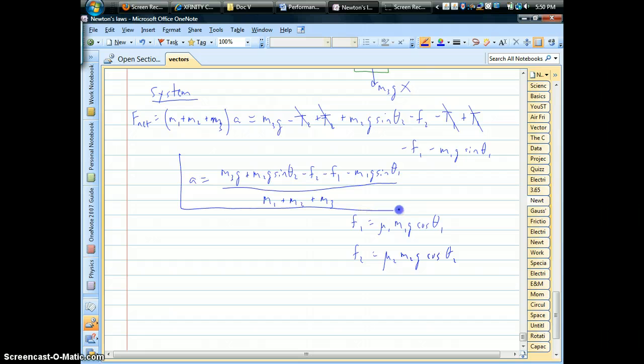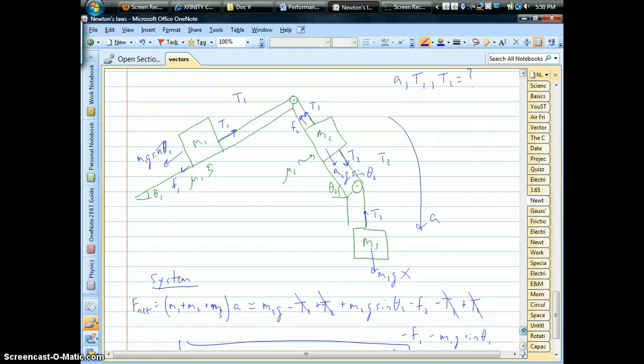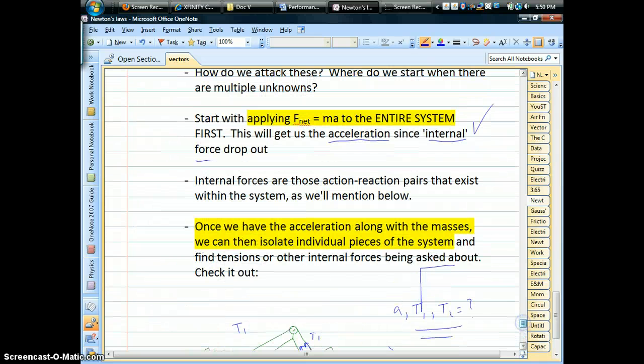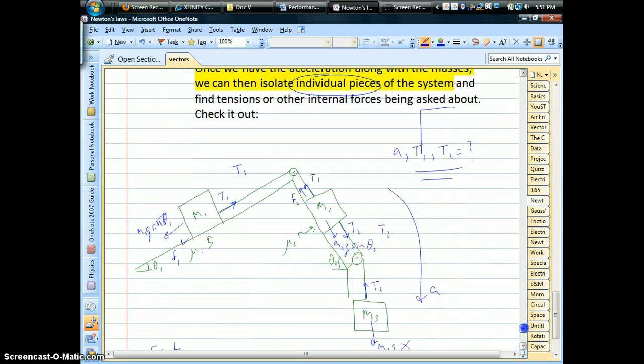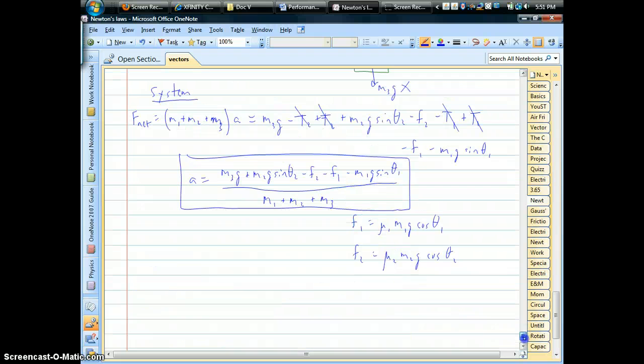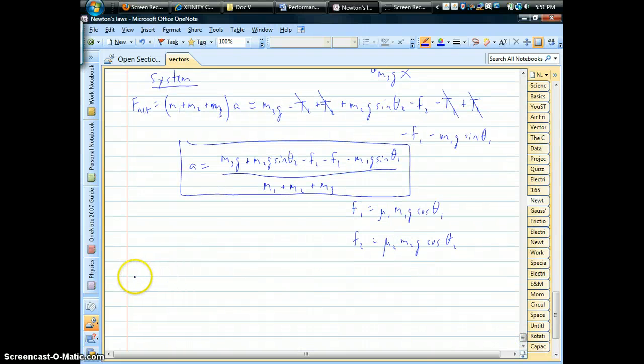But the other parts of the problem, we're to figure out what the tension forces are. Okay. So how do we get the tensions? Well, looking at our little methods here, now that we have the acceleration, we assume that we know what the mass is, now we can isolate individual pieces of the system. Okay. So, for example, let's say we want to find tension one. Well, the easiest one, looking at the picture, would probably be mass one right there. It only has three forces acting on it, two of which we know.